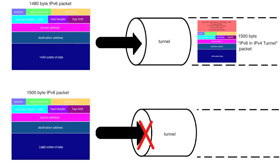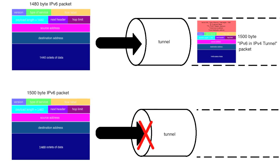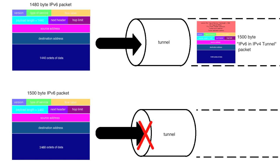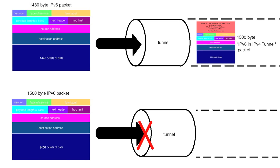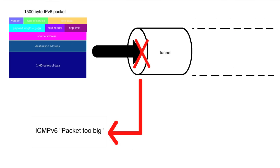Per RFC 2460, every IPv6 destination must be able to reassemble a fragmented IPv6 datagram up to 1500 bytes in length. For an IPv6 packet going through a basic protocol 41 tunnel, it must be 1480 bytes or smaller, because the tunnel will add 20 octets to the packet header. If it's too large, then the packet is discarded, and an ICMPv6 packet-too-big message is sent back to the v6 source address.